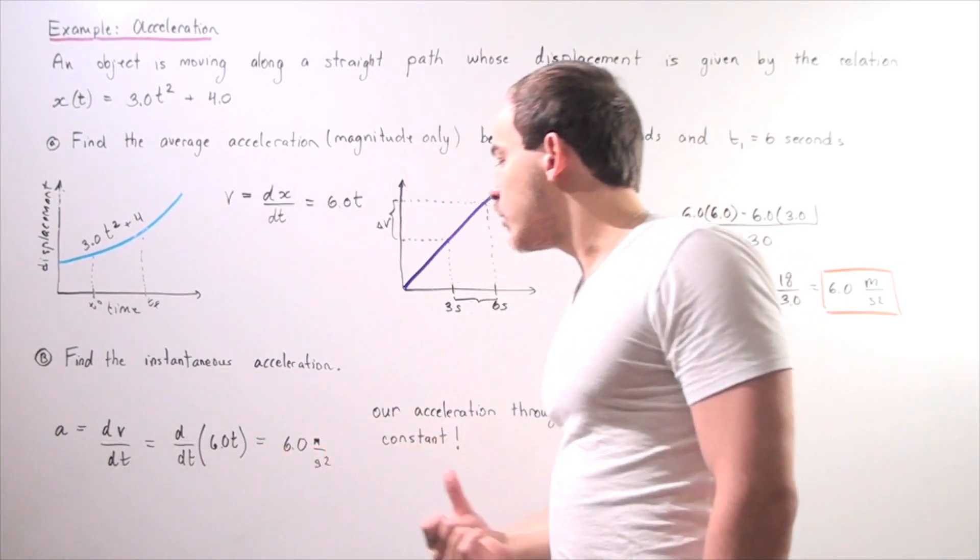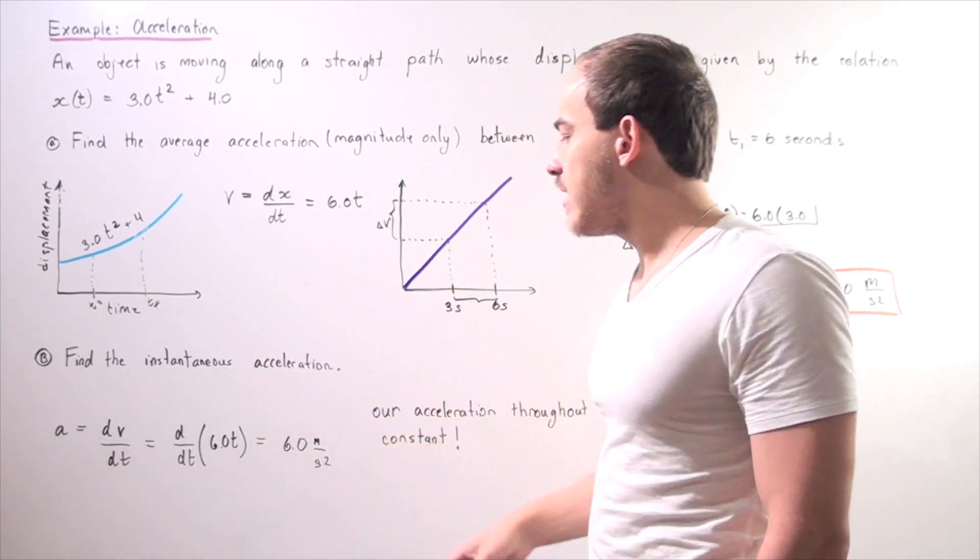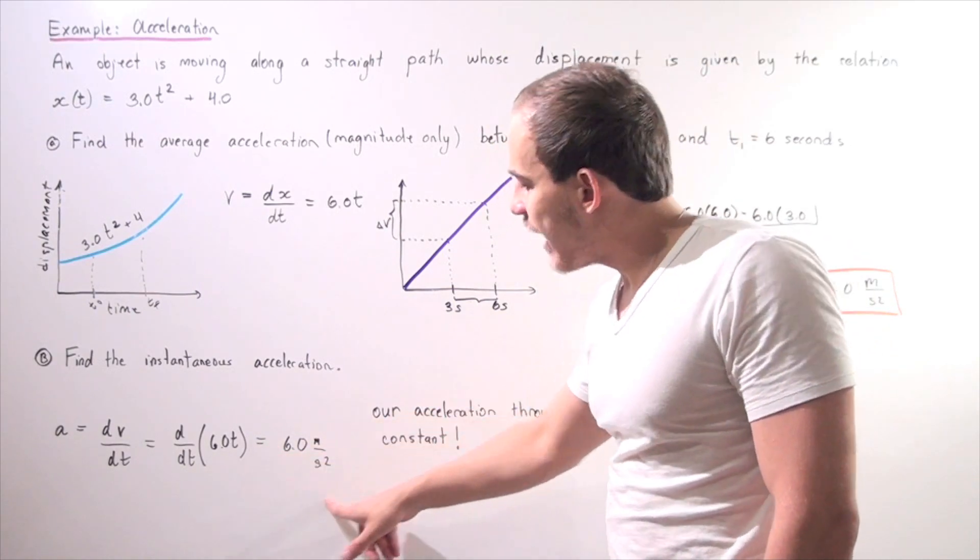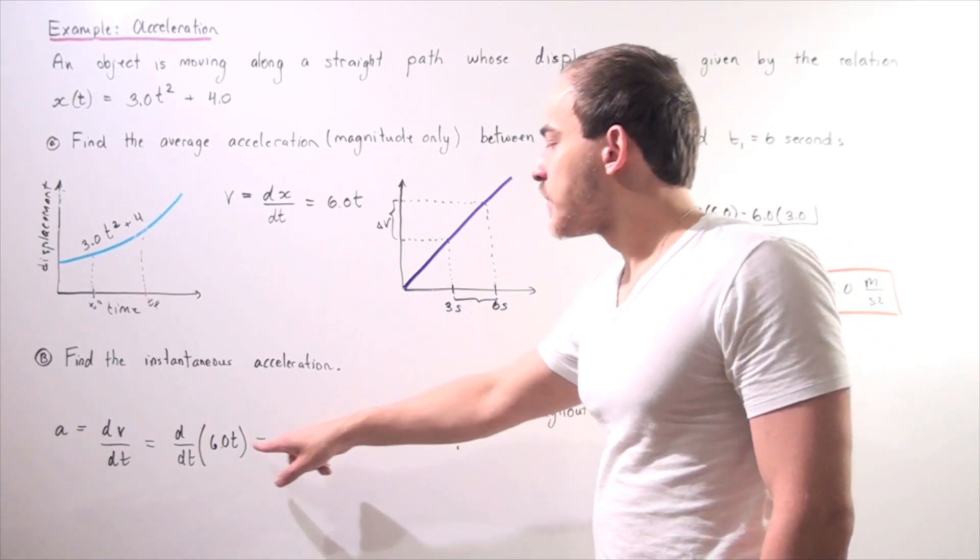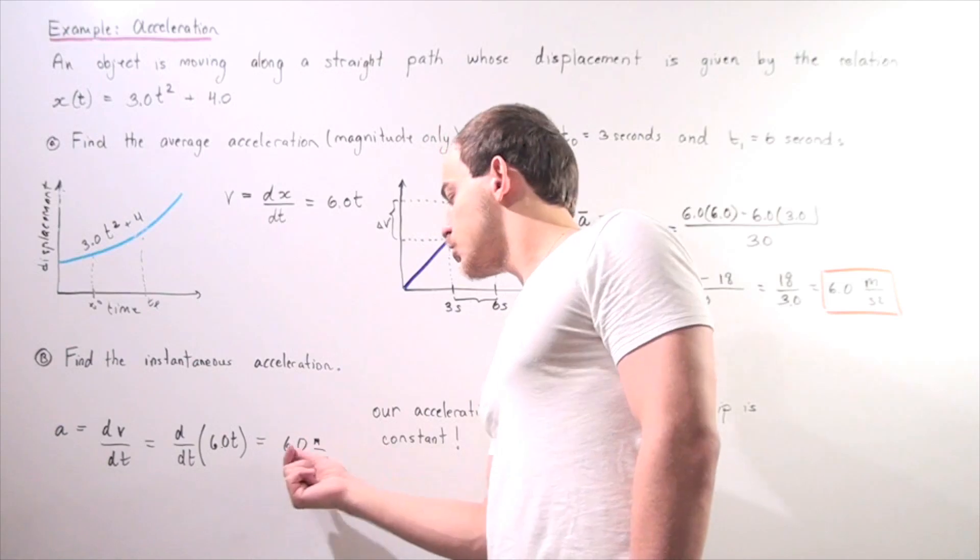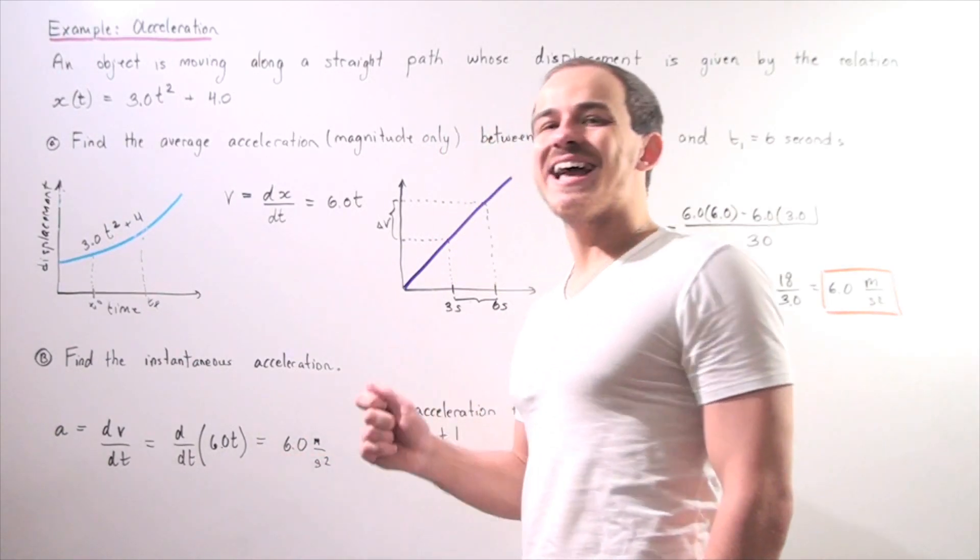So our t cancels out, it becomes a 1, and now we get the following value. So our acceleration equals 6.0 meters per second squared.